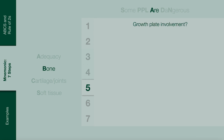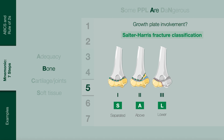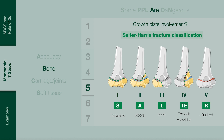In children, determine if there is growth plate involvement, also known as a Salter-Harris fracture. There are five types, remembered using the mnemonic SALTR. In type 1, S is for separated or slipped, where the fracture line extends through the growth plate. Type 2, A is for above, where the fracture line extends through the physis and above the metaphysis. Type 3, L is for lower, where the fracture line extends through the physis and into the epiphysis. Type 4, T is for through everything, where the fracture line extends through the metaphysis, physis and epiphysis. Type 5, R is for the R in crushed, where compressive force leads to growth plate destruction and subsequent growth arrest.